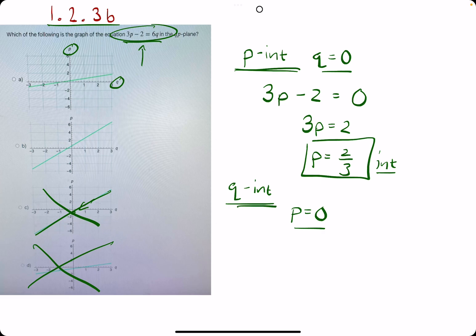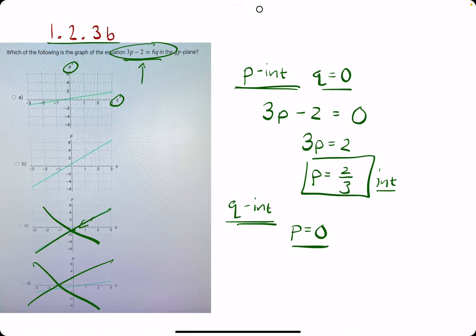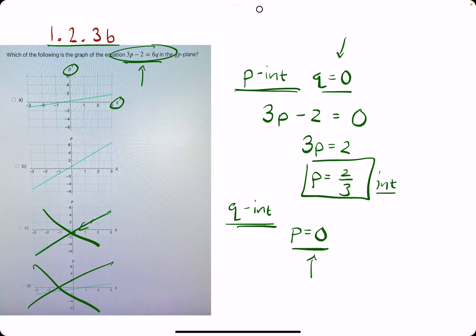Let's find the q-intercept by plugging in p equals 0. As you might have noticed, we're plugging in 0 for the other variable whenever we're trying to find a certain intercept. So for the q-intercept, we plug in p equals 0.